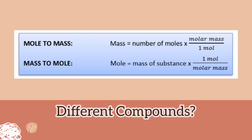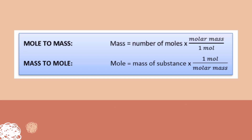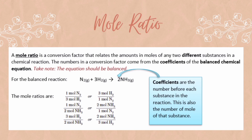Now, how about if we have different compounds? For different compounds, we cannot directly convert mole-to-mass or mass-to-mole. In this case, we use the mole ratio. A mole ratio is a conversion factor that relates the amounts in moles of any two different substances in a chemical reaction. The numbers come from the coefficients of the balanced chemical equation. Take note that the equation must be balanced. For example, in N₂ + 3H₂ → 2NH₃, the mole ratios are as follows.